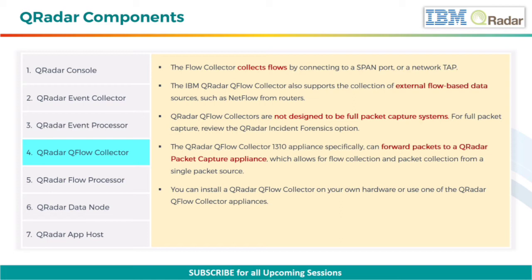The QRadar QFlow Collector Appliance specifically can forward packets to a QRadar Packet Capture Appliance, which allows for flow collection and packet collection from a single packet source. You can install a QRadar QFlow Collector on your own hardware, or use one of the QRadar QFlow Collector Appliances.